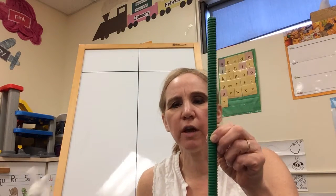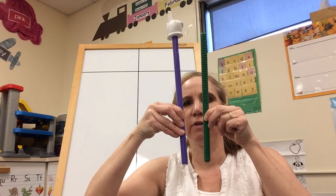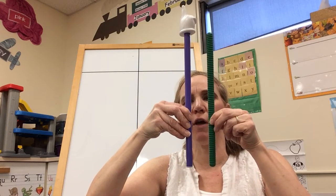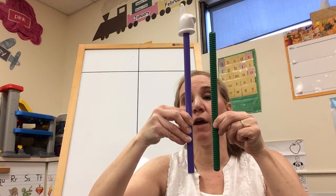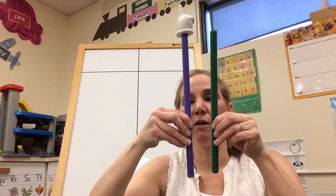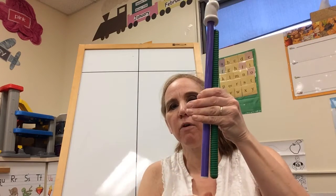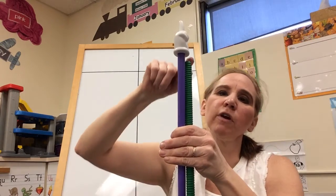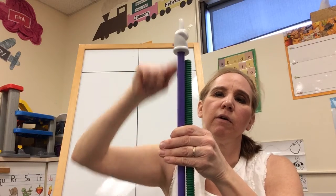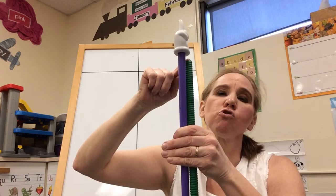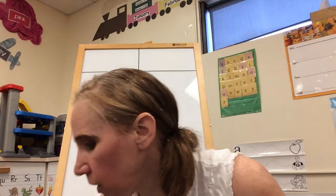Is the rhythm stick taller than the pointer or shorter than the pointer? Let's get them even. Shorter than — that's right! Because the rhythm stick only goes up to here, and the pointer keeps going all the way up to here. So the rhythm stick is shorter than the pointer. Let's try another one.